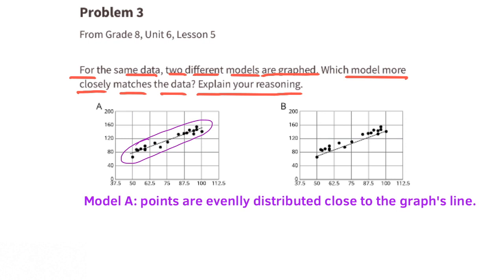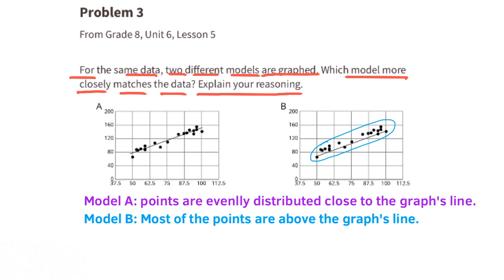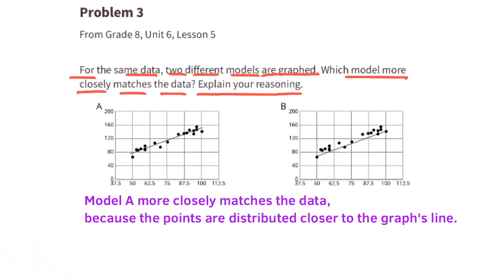Let's look at model A. The points are evenly distributed and close to the graph's line. Let's compare that with model B, where most of the points are above the graph's line. I'd say model A more closely matches the data because the points are distributed closer to the graph's line.